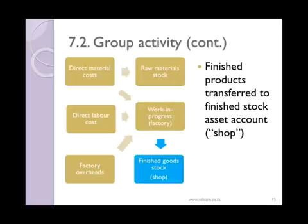Generally, businesses would work out a standard cost per unit by tracking it very carefully over time, and from experience they know what the item actually costs. For our purposes, we are not going to do this. We are simply going to take all the costs, put them into work in progress, and then work out the cost per item at the end of the period. I leave it up to you to decide how much of your overheads to leave in work in progress and how much makes up part of your finished goods stock cost.